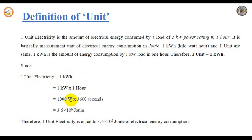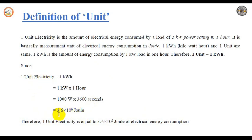1 kWh means 1000 W into 1 hour, which is 3600 seconds. Taking it in terms of Joules — since Watts per second equals Joules — 1 kWh equals 3.6 × 10^6 Joules. So 1 unit of electricity is equal to 3.6 × 10^6 Joules. This is the unit of electrical energy consumption.